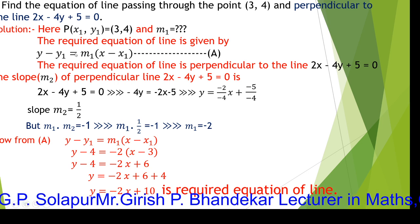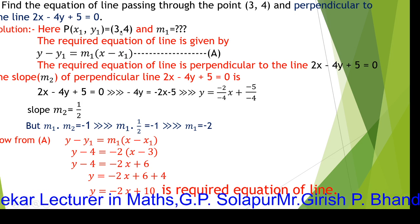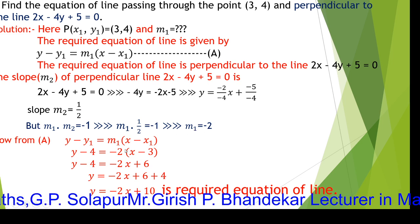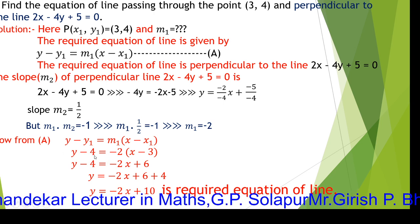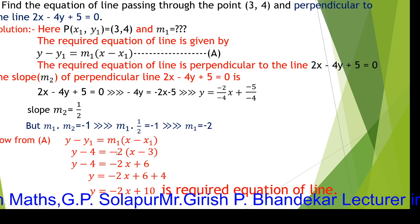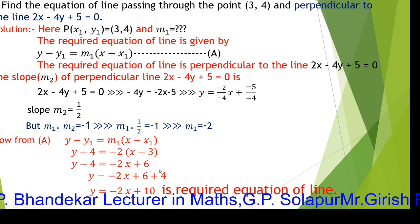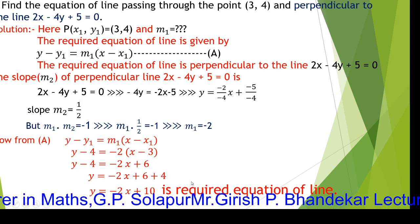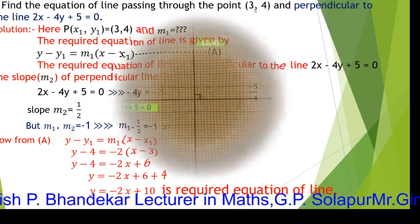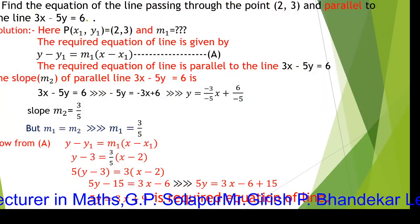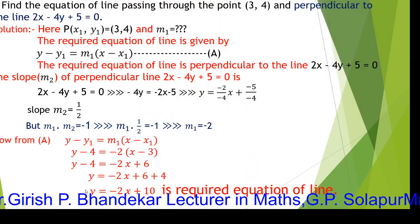Now we have M1 equals minus 2, x1 equals 3, and y1 equals 4. Substituting into the slope-point form: y minus 4 equals minus 2 times (x minus 3), which gives y minus 4 equals minus 2x plus 6. Transforming minus 4 to the other side: y equals minus 2x plus 10. This is the equation of the straight line passing through (3, 4) and perpendicular to 2x minus 4y plus 5 equals 0.